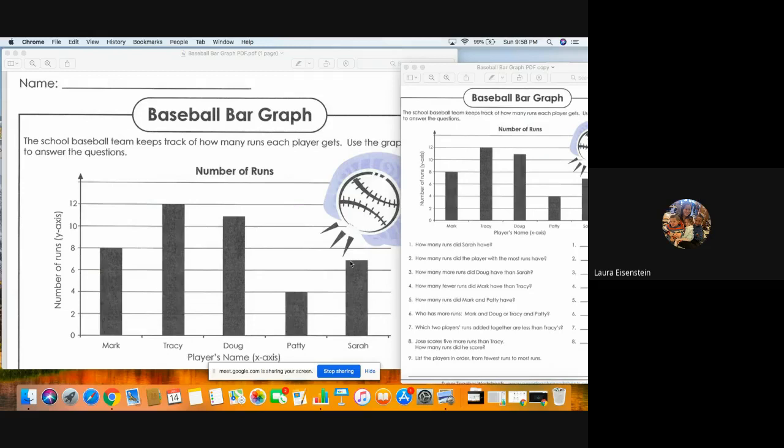Like over here for Sarah, if it's not touching a line, that's going to be one more than the number on the last line or one less than the number on the next line. So Sarah would have seven runs because she's in between six and eight.